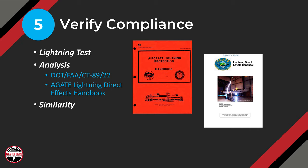The last compliance method that doesn't get used as much is similarity. Similarity tends to get used where you have, for example, a metallic wingtip on an Airbus A320 and want to use that same wingtip on an Airbus A319. The designs are very similar, so you can apply the certification approach from one design to the next. That's where similarity tends to get used in CS25.581-type processes.